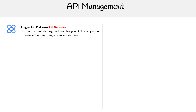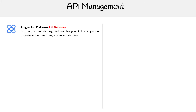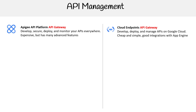We have a couple of options here. We have the Apigee API platform — develop, secure, deploy, and monitor APIs everywhere. It's expensive but has many features. Then we have Cloud Endpoints, also an API gateway — develop, deploy, and manage APIs on Google Cloud. It's cheap and simple with good integrations with App Engine and other services.